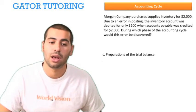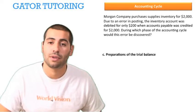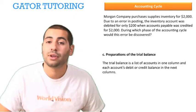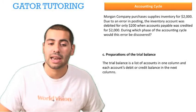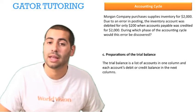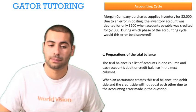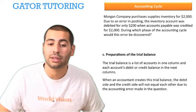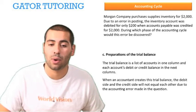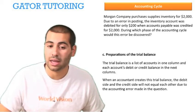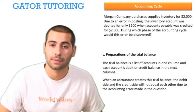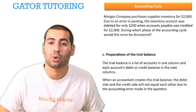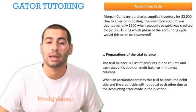The correct answer is C. Preparation of the trial balance. The trial balance is a list of accounts in one column and each account's debit or credit balance in the next columns. When an accountant creates this trial balance, the debit side and the credit side will not equal each other due to the accounting error made in the question. The difference in debits and credits will be $1,800,